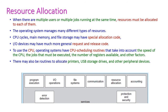The next service is resource allocation. If multiple processes or jobs are running at the same time, resources must be allocated to each process. The OS manages many types of resources: CPU cycles, main memory, file storage — which may have special allocation code — and IO devices, which may have request and release codes. For CPU use, the OS has a CPU scheduling routine.